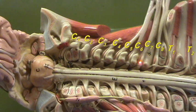So again, this is C7, it's leaving above C7. This is C8, it's leaving below C7.